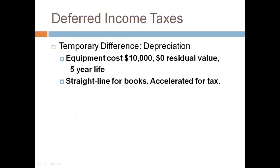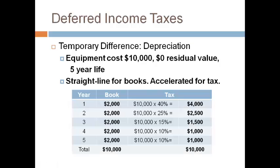Let's first discuss what a book-tax difference really is and where it comes from. We will use the example of depreciation. The amount of depreciation is computed differently under GAAP and under IRS rules. We will use an example of equipment with a five-year life. The company uses a straight-line method for accounting and reporting, while the IRS rules say to use the percents noted on the screen.